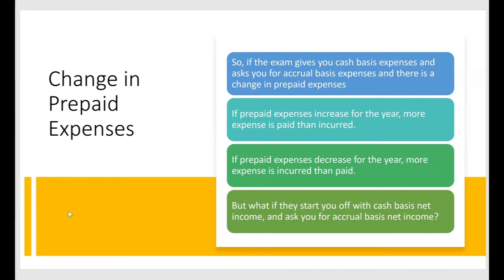If the exam gives you cash basis expenses and asks for accrual basis expenses with a change in prepaid expense: if prepaid expense increases for the year, more expenses were paid than incurred — cash basis expense is higher than accrual basis expense. But if prepaid expenses decrease for the year, more expenses were incurred than paid. Now, what if instead they start you with cash basis net income and ask for accrual basis net income, and there's a change in prepaid expenses?